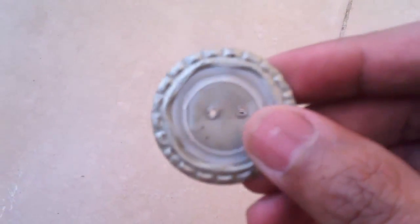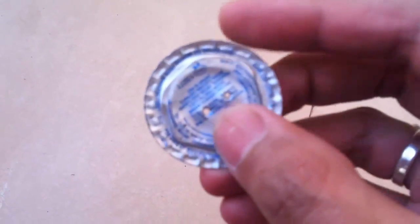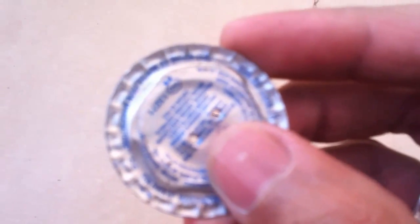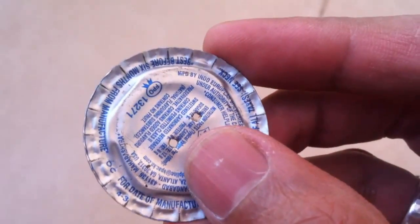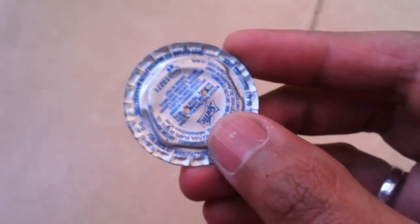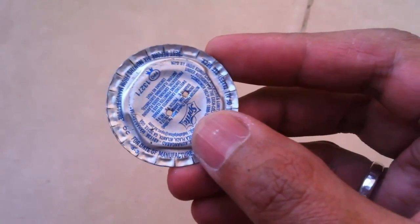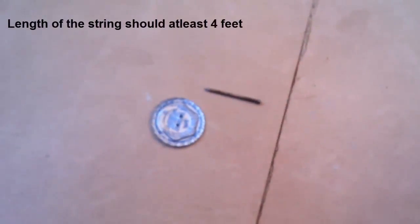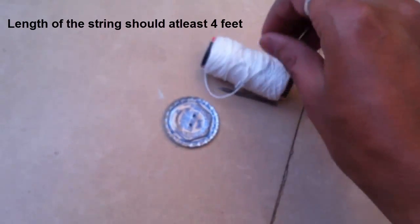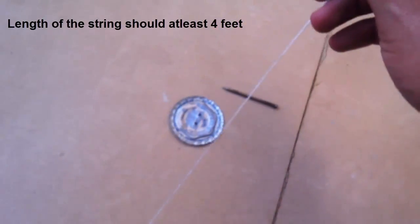As you can see, I made two holes inside this metal cap. The holes should be at the center and should be near to each other. Now we will use the thread for the string. Let's cut the string.